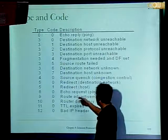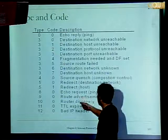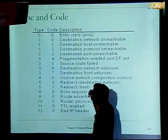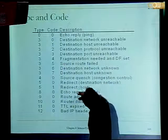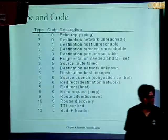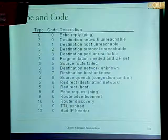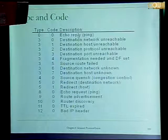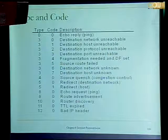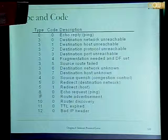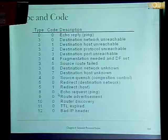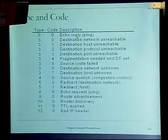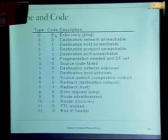If there are errors in processing route advertisement or route discovery, you send a corresponding ICMP message. If you want to send an echo request, you send that; if you want to send an echo reply, you send that. So you have error messages, echo request, and echo reply. There is a tool called ping that sends these ICMP echo request messages, and the host should reply with an echo reply.